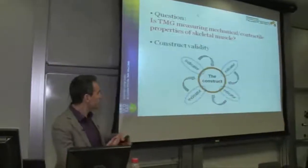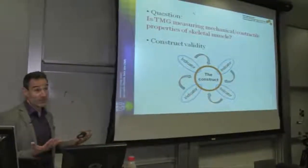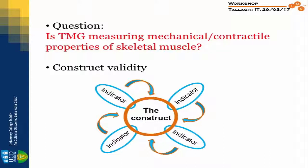The way to proceed is looking at construct validity. We can't really look at criterion validity or concurrent validity. It's a matter of construct validity, which means that we need to find a number of indicators to prove the construct — which is the question I started with.